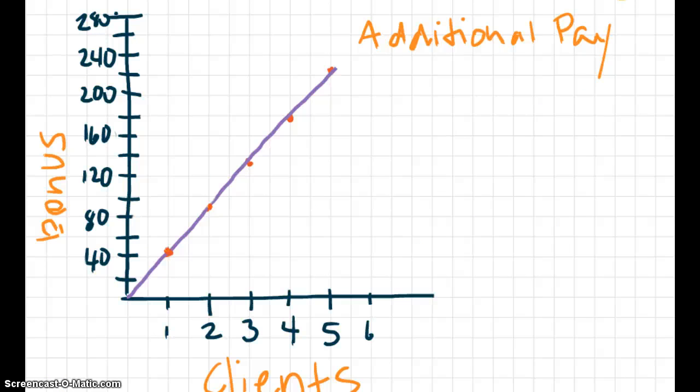Alright, so after you've graphed it, you should have something that looks like my graph. Maybe your scale was a little bit different, that's fine. Notice a good graph has a title. It has the X axis labeled and it also has the Y axis labeled.